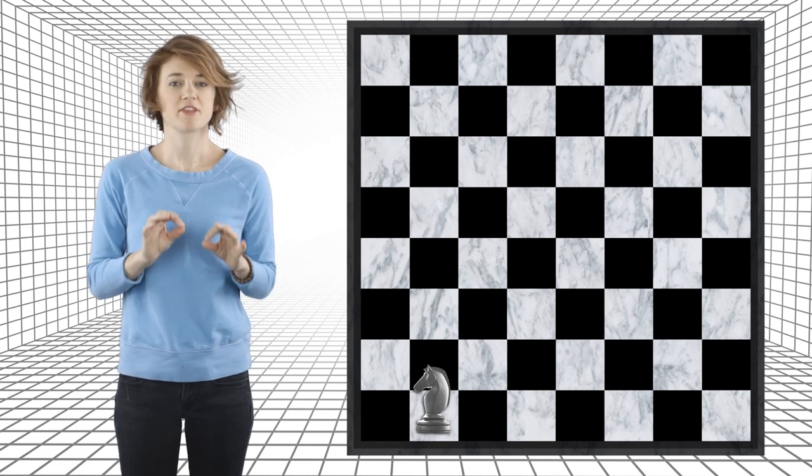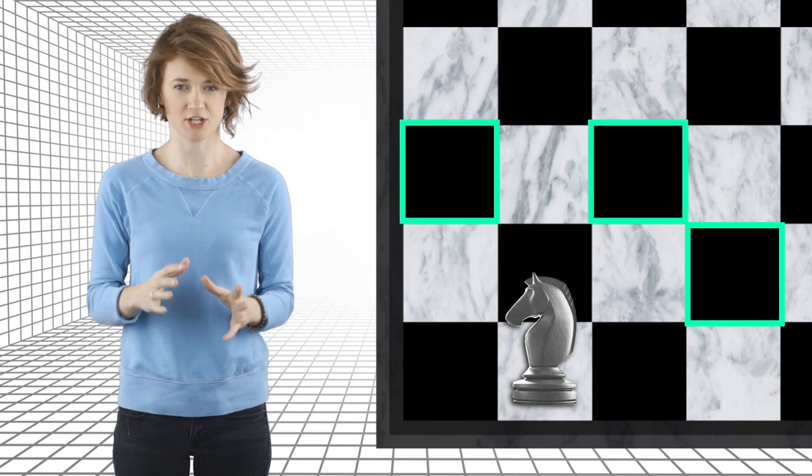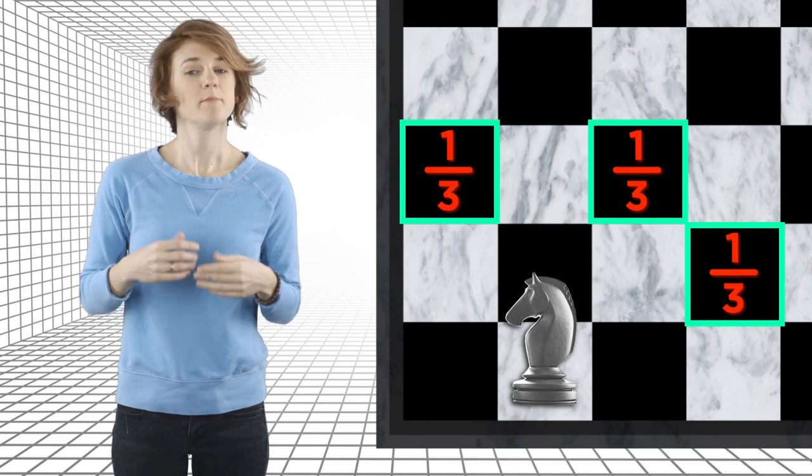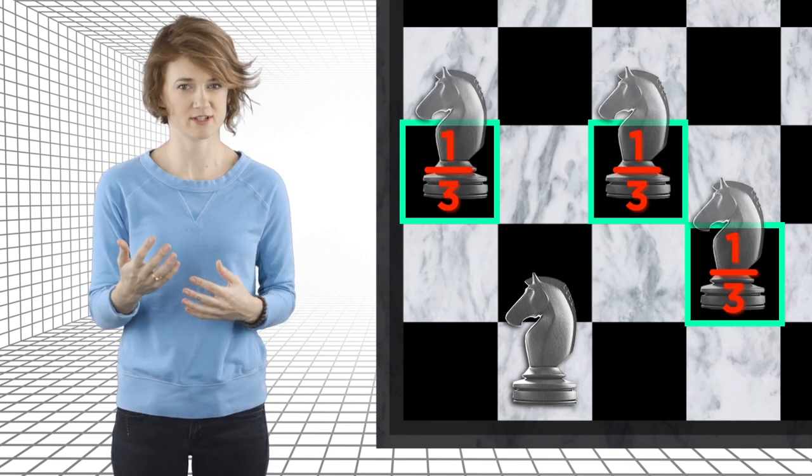From there, the knight has three legal moves, any of these capital L-shaped jumps. And it makes each of these jumps with probability 1 third, meaning that it jumps here 1 third of the time, here 1 third of the time, and here 1 third of the time.